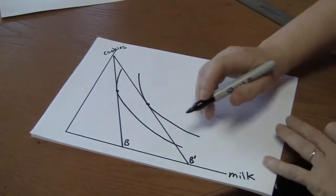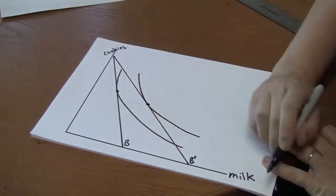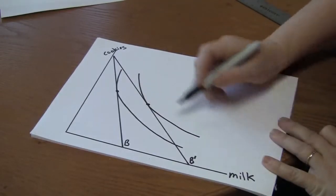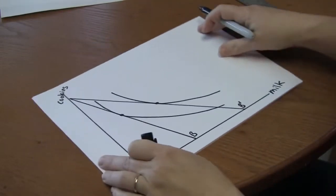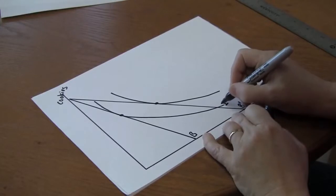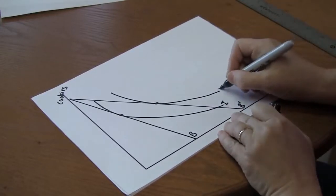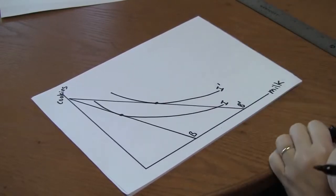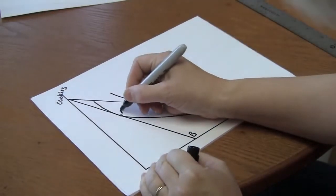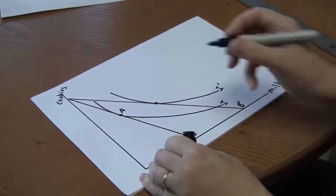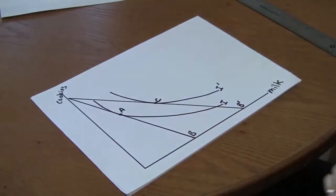Notice how when I drew it, I moved the paper around and drew it upside down like this. Original indifference curve, indifference curve after the price fall. Original choice, choice after the price decrease.